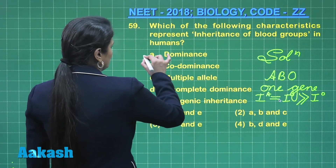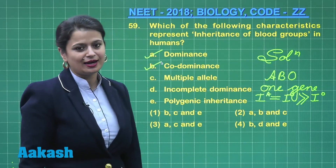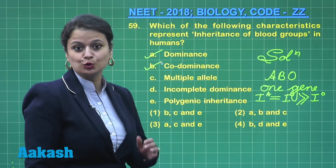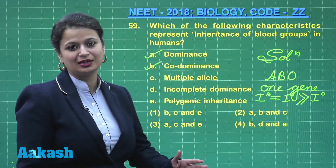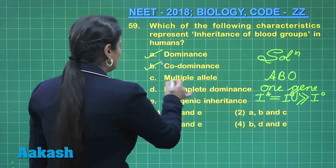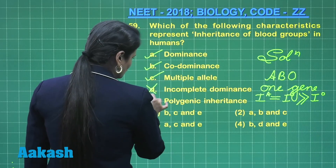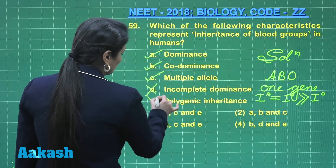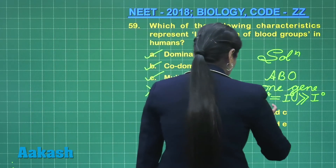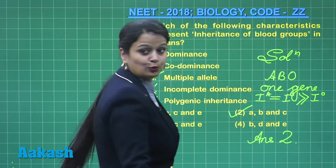Looking at the options: yes, it is a case of dominance; yes, co-dominance is shown by IA and IB alleles — when IA and IB are present together, both are expressed, so it is co-dominance. Multiple alleles — at least three alleles are involved. Incomplete dominance is not shown here. It is a case of monogenic inheritance, not polygenic inheritance.